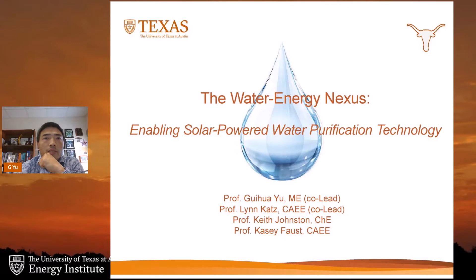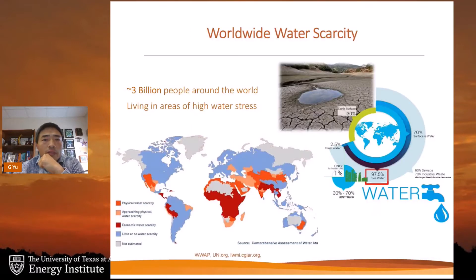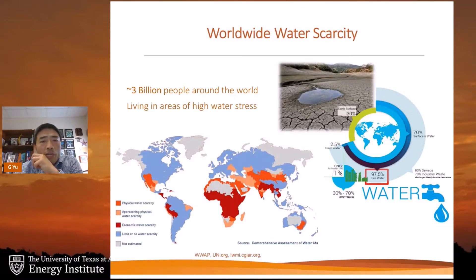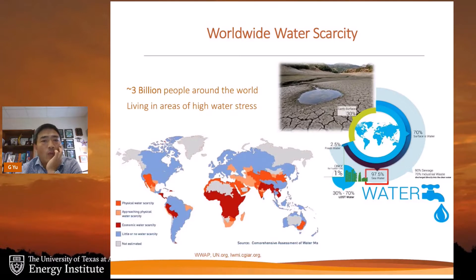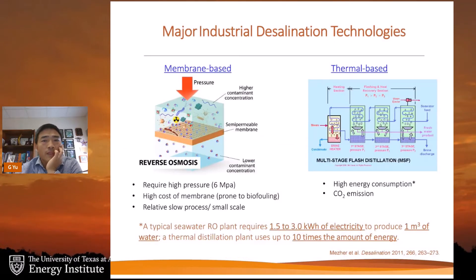The energy and water issues are two of the grand challenges our modern society is facing. While water covers 70 percent of our earth, only a very limited amount is fresh water that can be directly used by human beings. Fresh water resources such as rivers and lakes are experiencing deteriorating pollution and climate-related water loss. Currently over three billion people have difficulty getting access to clean water.